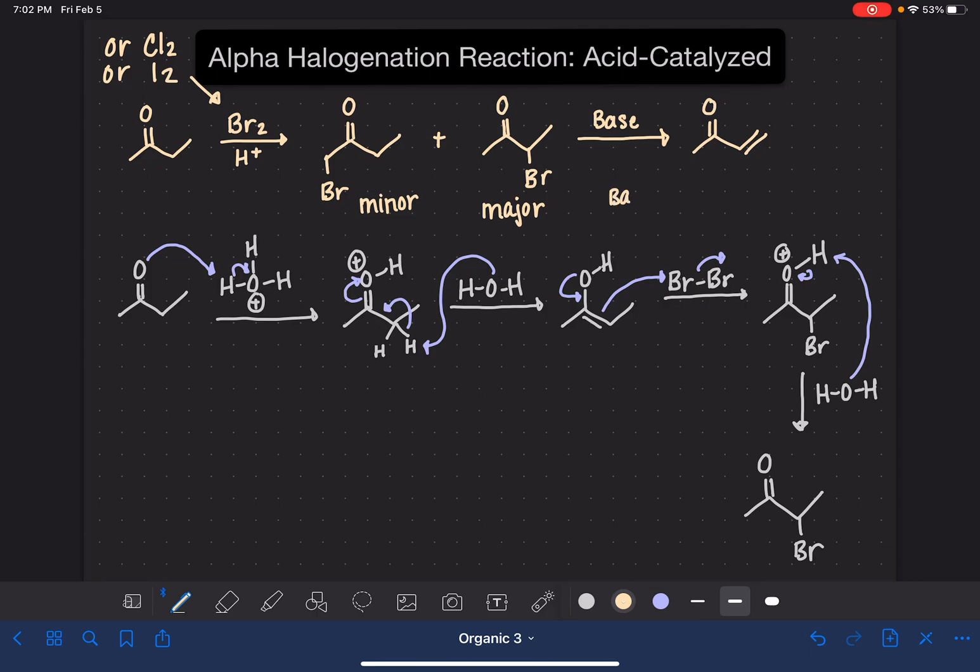So the bases that we can use for this would be our bulky base that we're used to using, tert-butoxide, O-C(CH3)3. But you could also see this done with lithium carbonate, Li2CO3. And you could also see it done with pyridine, which we've used before as a solvent. But this pyridine also works for the base for this second step of the reaction.